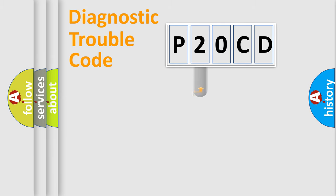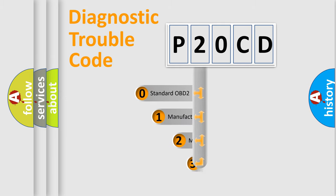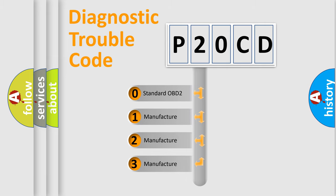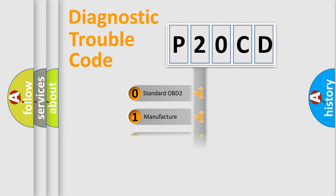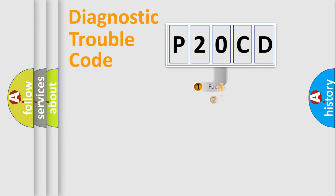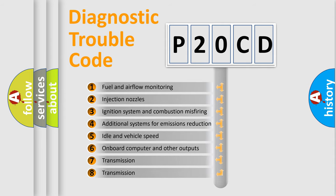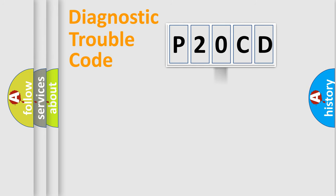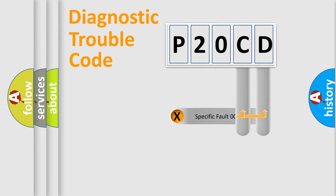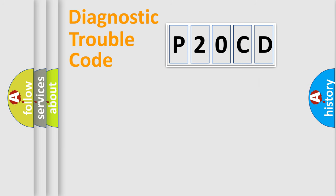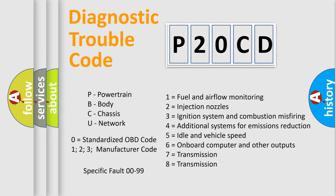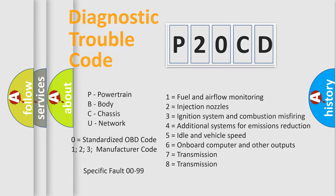This distribution is defined in the first character of the code. If the second character is expressed as zero, it is a standardized error. In the case of numbers 1, 2, or 3, it is a more specific expression of the car-specific error. The third character specifies a subset of errors. The distribution shown is valid only for the standardized DTC code. Only the last two characters define the specific fault of the group, and this division is valid only if the second character is zero.